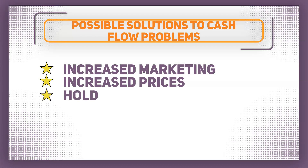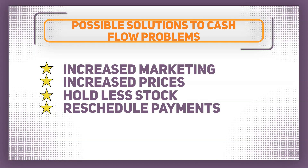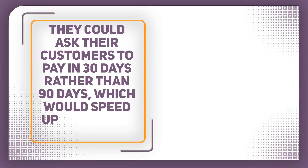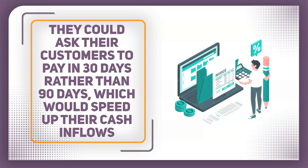Some businesses may consider holding less stock, perhaps moving from a just-in-case approach to a just-in-time approach, meaning less money is actually tied up in stock. However, there is a risk that they might run out of a certain product, which could damage sales and their brand reputation with customers. They could also look at rescheduling payments — asking their customers to pay in 30 days rather than giving them 90 days, which would speed up their cash inflow. However, they may end up losing sales by asking customers to pay so quickly.